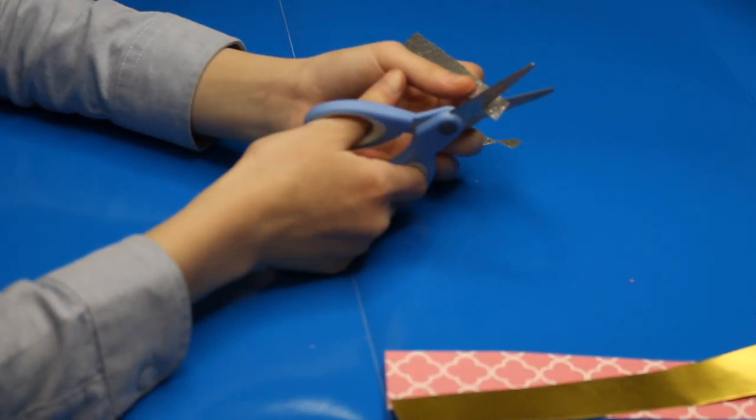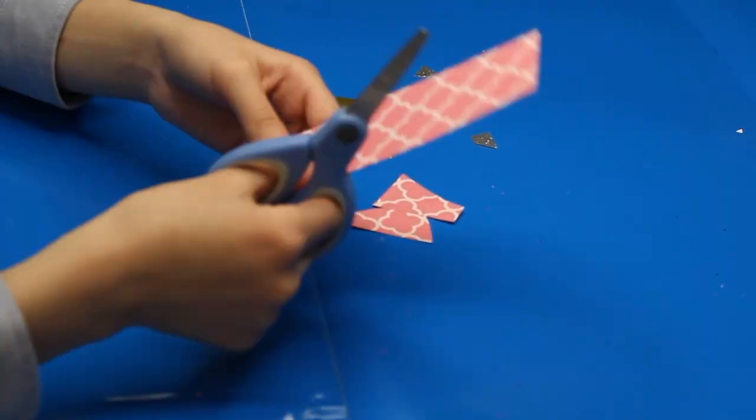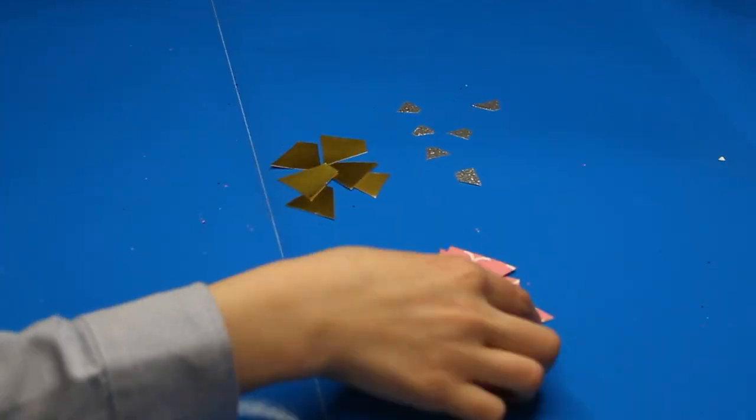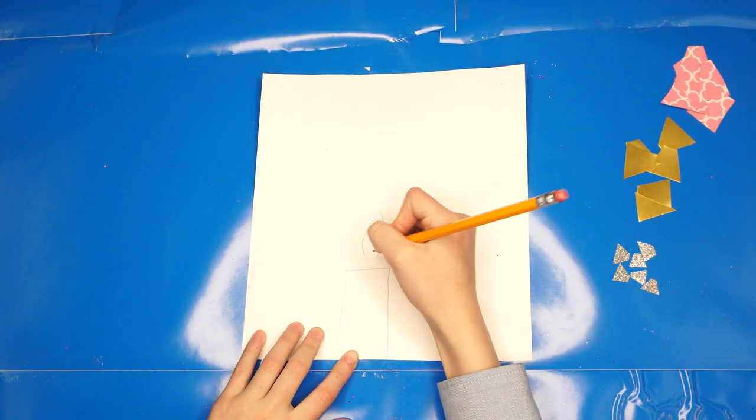While we are cutting, let's talk about why we are making a Shabbos Candle. A Shabbos Candle teaches us to always spread light to everyone no matter where you are and whoever you meet. Once you have finished, trace a rectangle and flame on the back of your gold paper and cut it out.